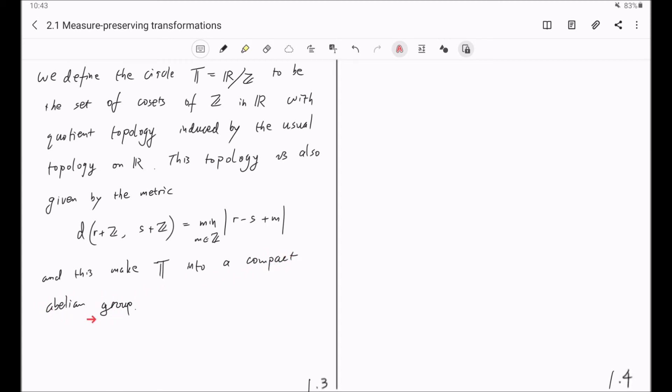And it is an abelian group because it is very clear that since R itself is an abelian group, when you take the quotient, this quotient is also automatically an abelian group.